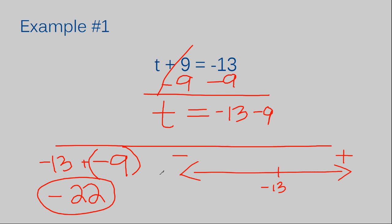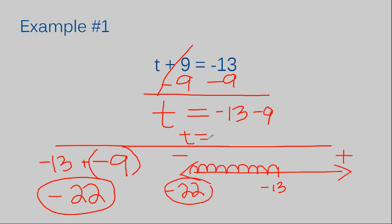On a number line, numbers get larger to the right and smaller to the left. To subtract 9 means taking 9 away, ending up with a smaller number, so I go left 9 spaces: 1, 2, 3, 4, 5, 6, 7, 8, 9. I end at negative 22. So however you choose to solve, you get the same answer: T equals negative 22. I have solved this equation that had an integer in it.